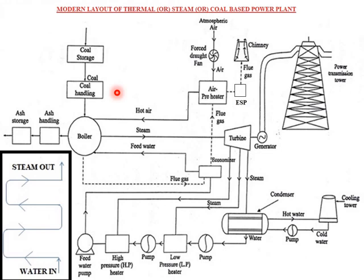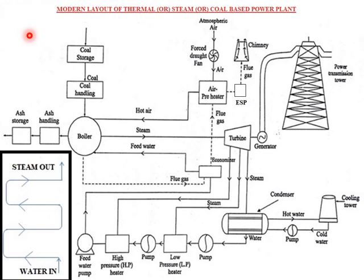The first circuit is the coal and ash circuit. If we use coal in the power plant, we can use coal such as bituminous. We extract coal from coal mines. We can use three modes of transportation: the first mode is roadways by using trucks, the second mode is railways by using wagons, and the third mode is seaways by using ships.